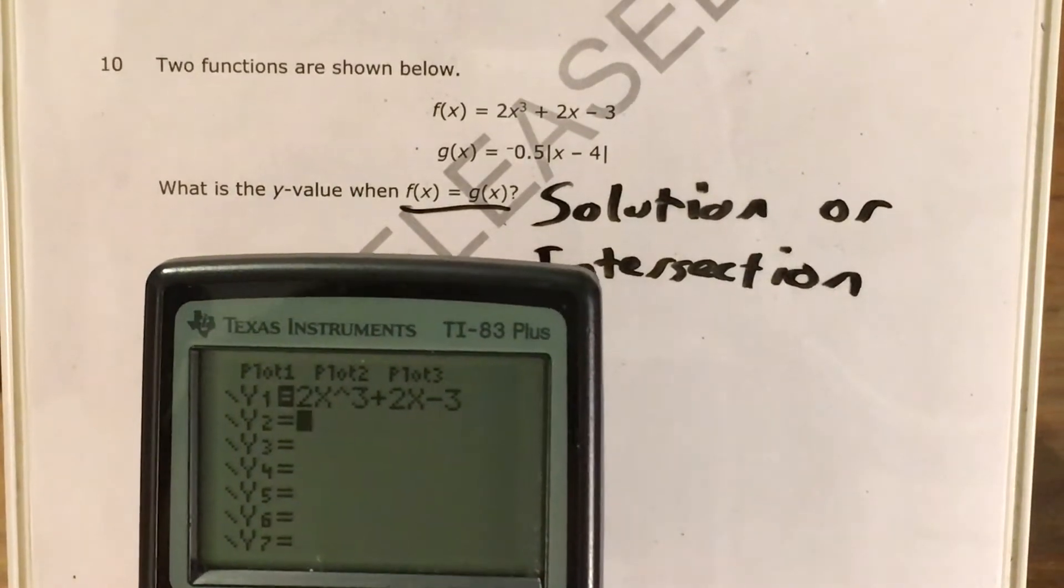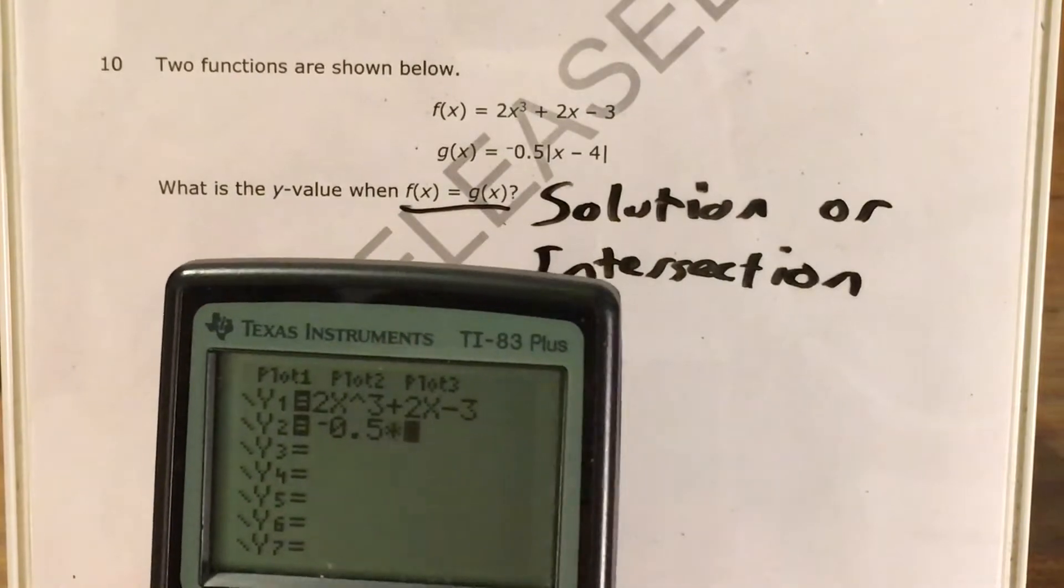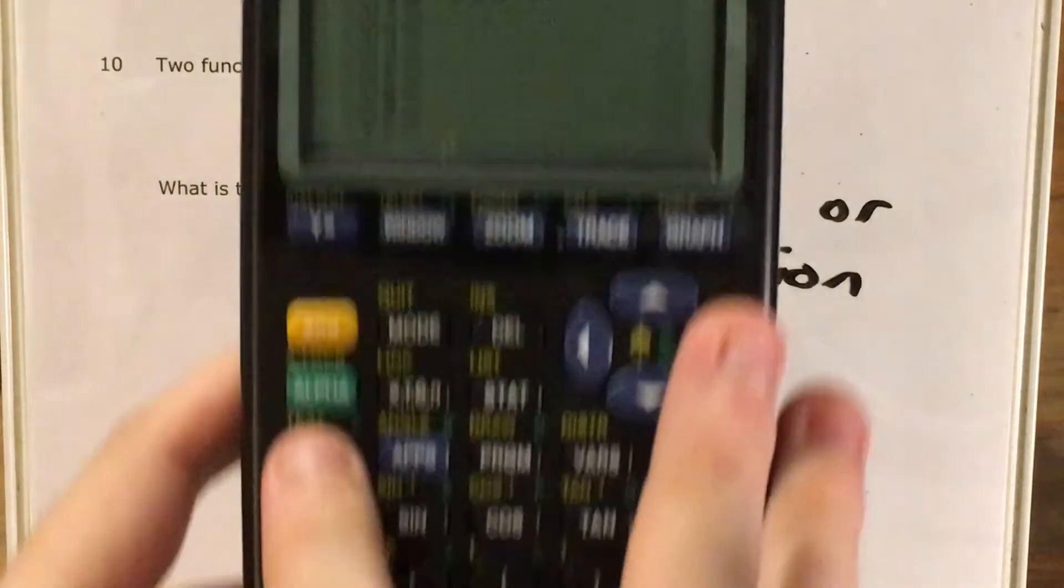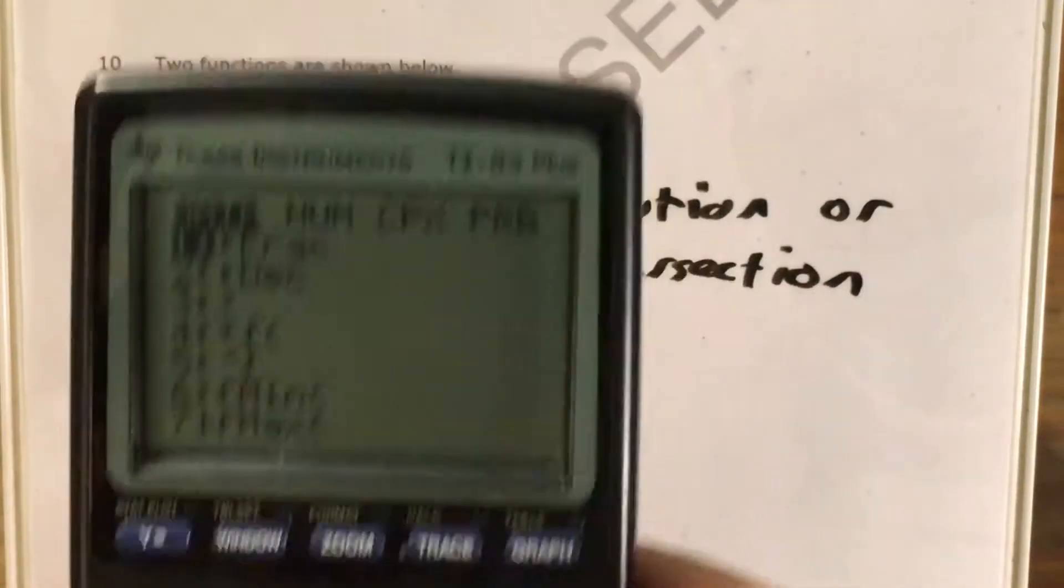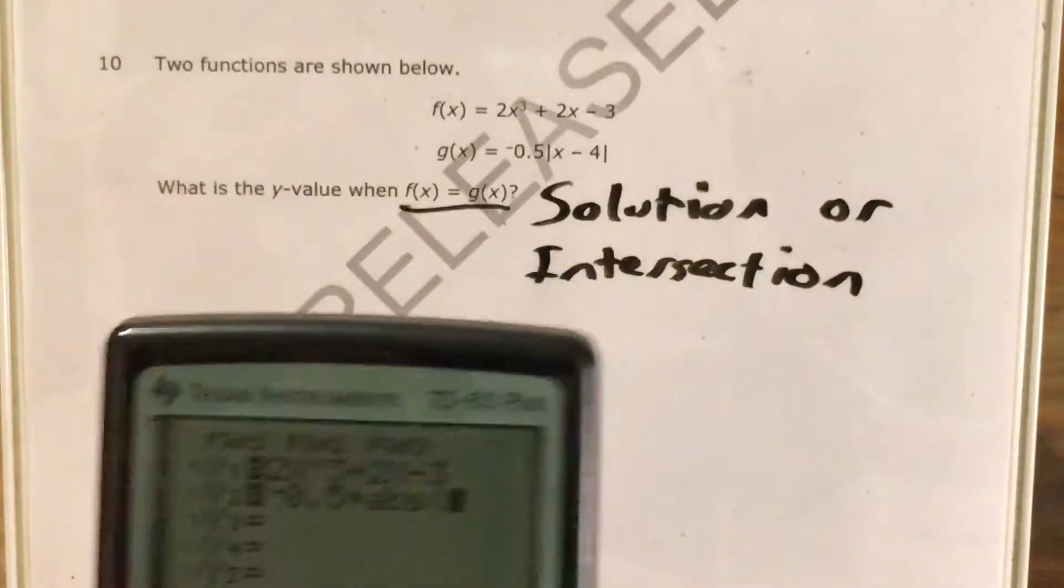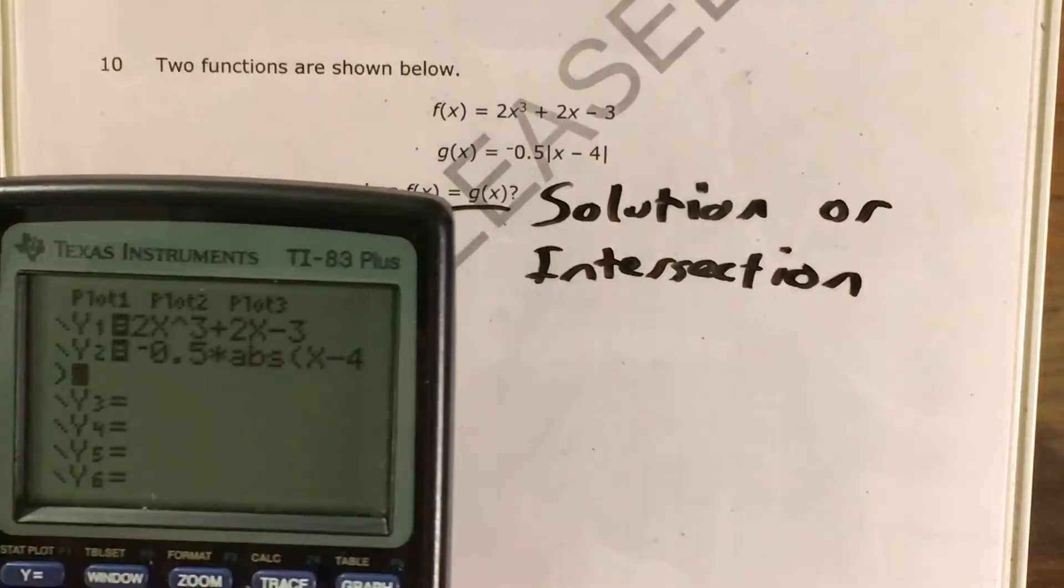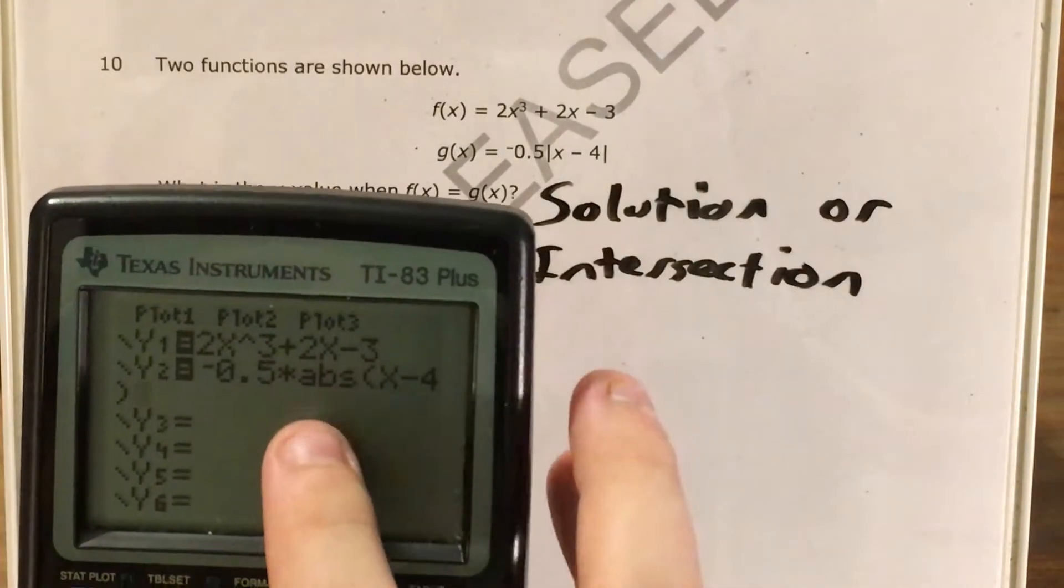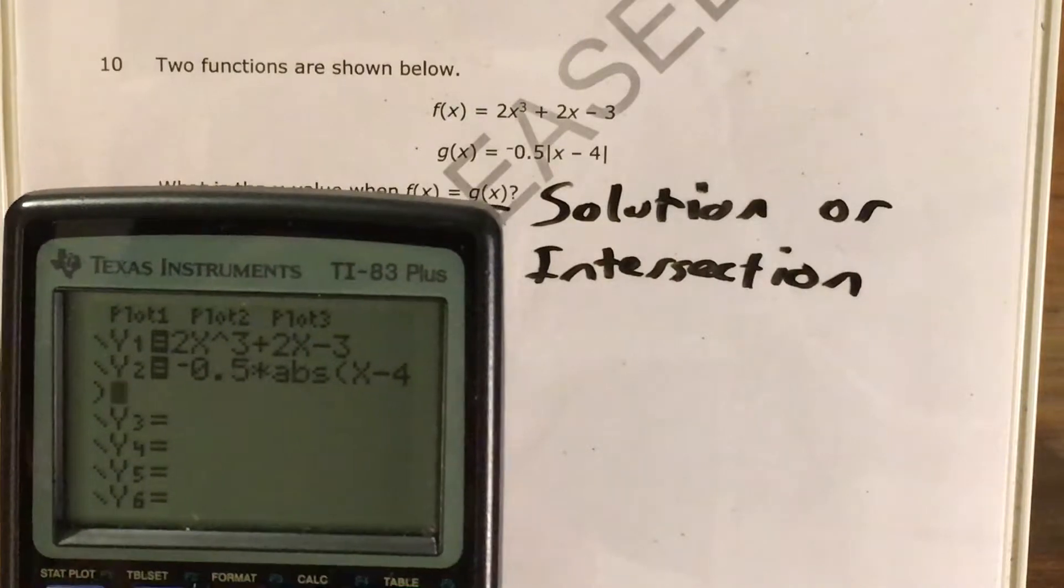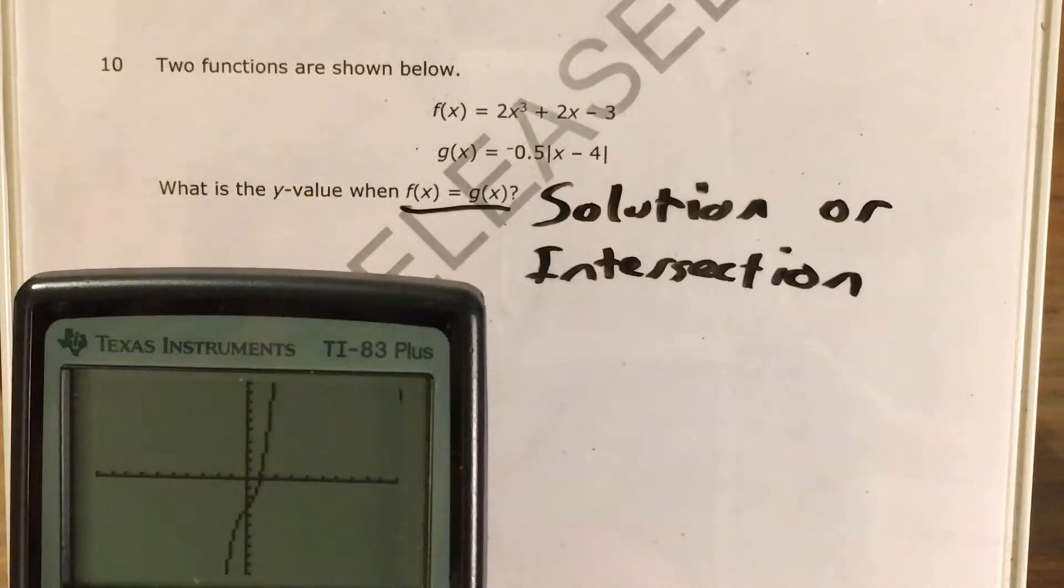And down here in y2, this is negative 5 tenths times, and now to find absolute value, I press math, I go right to the number menu, and my first choice is absolute value, and this is x minus 4. So I close my parentheses, make sure I've typed everything in correctly, yep, that looks good, so I go ahead and graph this.